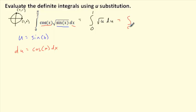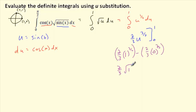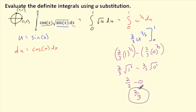Let's integrate. Rewrite it as u to the one-half du. Bump it up: that becomes 3/2, and flip it to put 2/3 in front. That's the integral, evaluated from 0 to 1. I don't have to re-substitute sine back in — I'm already good to go. Just plug and chug: first part is 2/3 times 1 to the 3/2, minus 2/3 with 0 plugged in. I love putting 0 in there. 1 to any power is 1, and 0 to any power is 0. So I end up getting 2/3 as my answer.